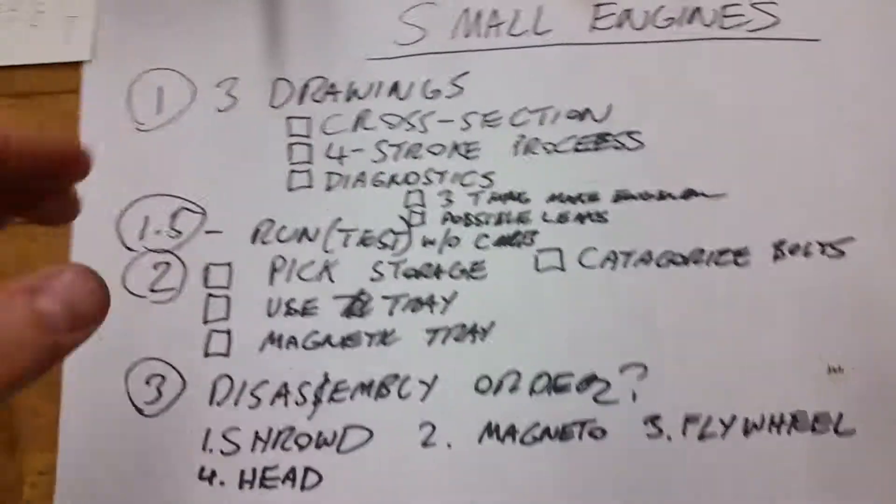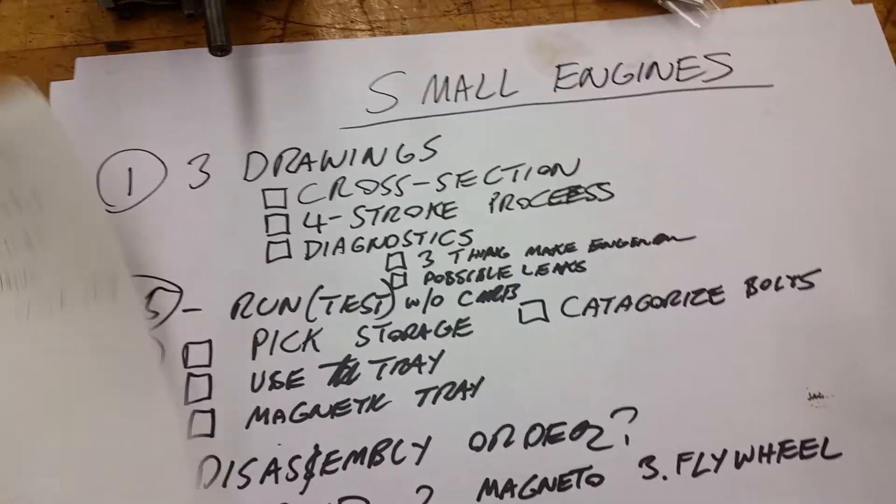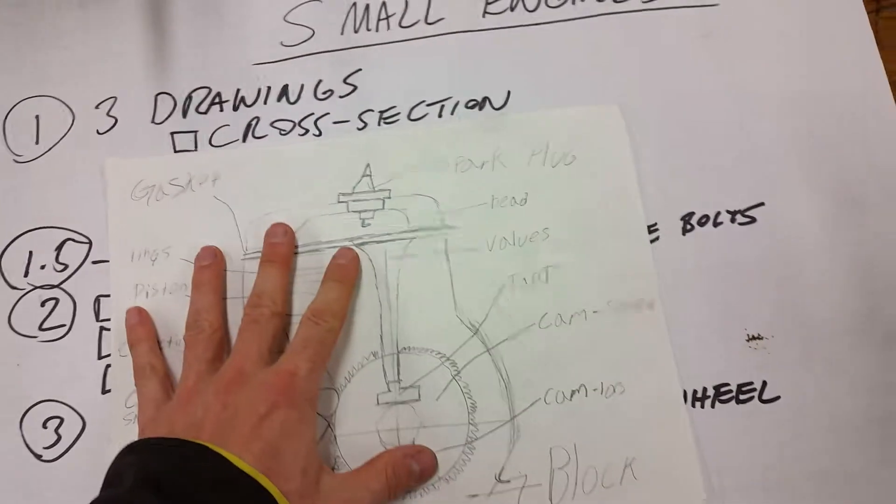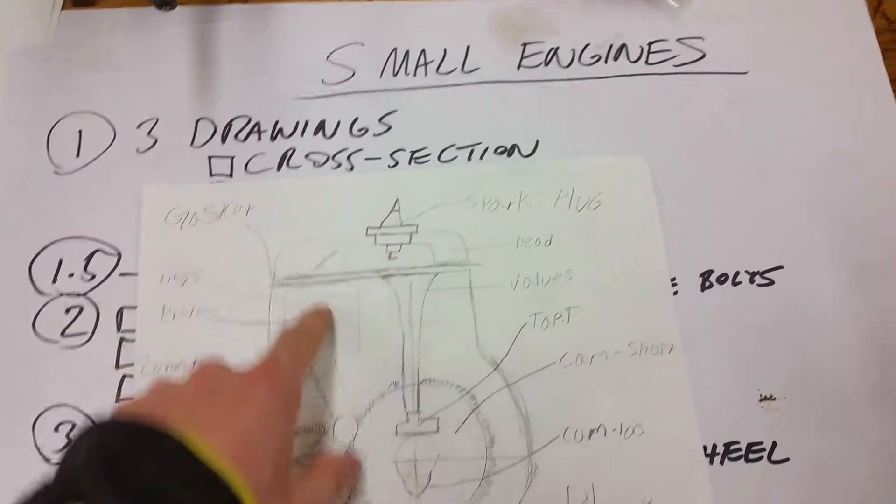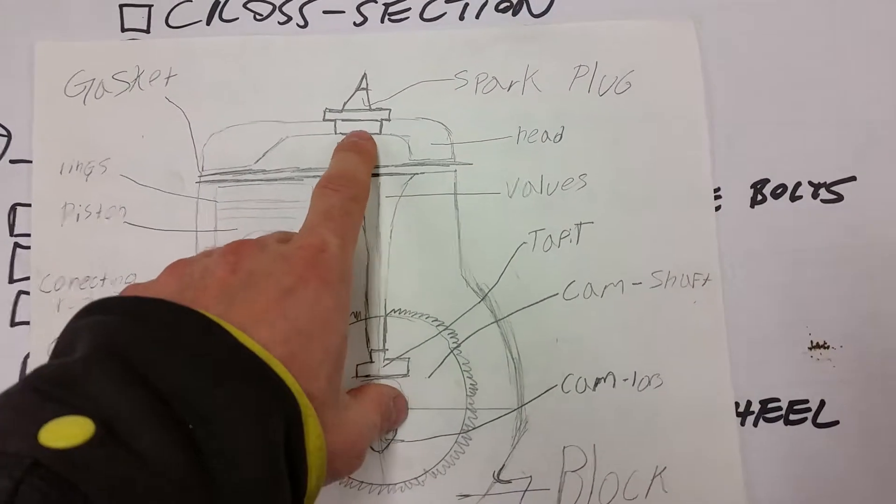But basically, we do these drawings first. This is one of my students' drawings. So let's see, first thing we do is the cross section, so this is all the parts. You have your valves, your spark plug...